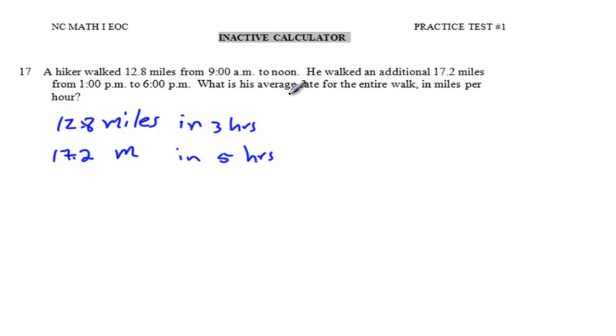You're looking for the average rate in miles per hour. Distance over time, that's the speed per hour. In order to find the speed, let's add the number of miles. How many miles did this hiker walk?